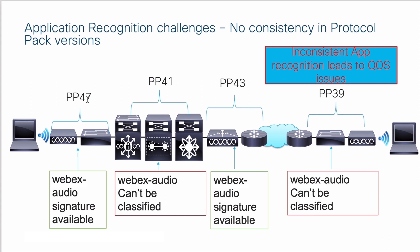For example, protocol pack version 47 has Webex audio support, whereas older protocol packs cannot recognize Webex audio. On a network like this, if you deploy QoS, it will be broken because several devices can't even recognize Webex audio correctly. These are all the different challenges that are why we have the Application Visibility Service on Cisco DNA Center.